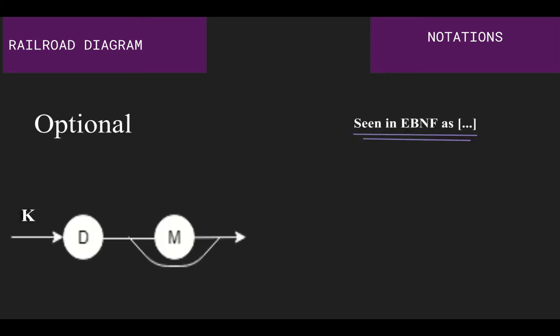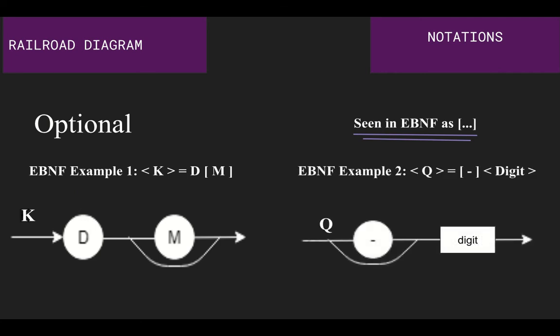To have an optional choice within the railroad diagram, it is drawn to allow for the terminal or non-terminal to be passed around it with a line around it, or to use the other option of using the statement within the circle or rectangle. In the first example, it allows for the choice of multiple outputs such as k equals dm and k equals d. In the second example, it has the choice for the final outputs to be a digit with 0 to 9, or to have a signed integer with the minus symbol or any digit between 0 and 9.